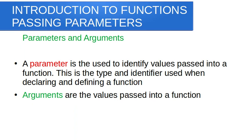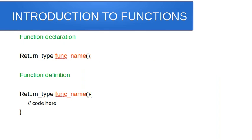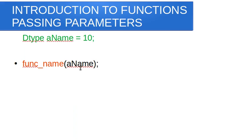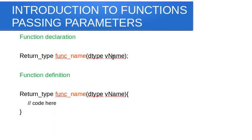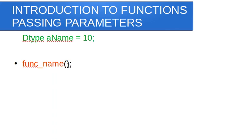A parameter is used to identify values passed into a function. When calling a function, you need to pass in a certain value. Because you've used a parameter in the function definition, you need to pass that specific argument when calling the function. That argument can be a variable, or it can be a direct value — for example you can pass in 10 directly and it will work.